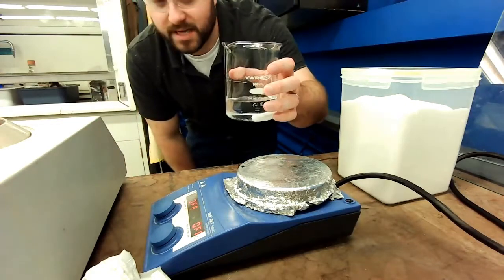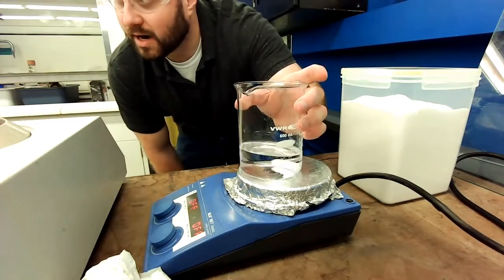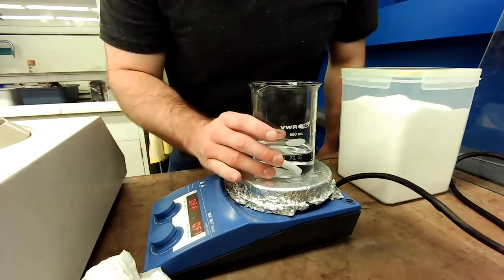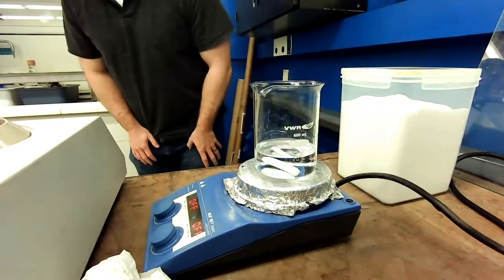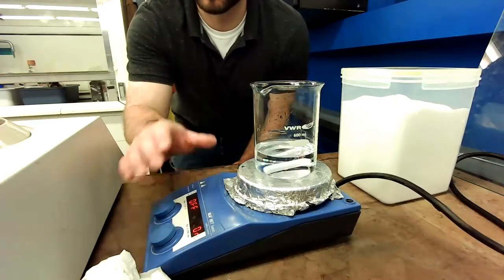Now what I can do is I'm going to take this thing and that magnetic stir bar is going to be attracted to the magnet in this plate. So I'm going to want to look at this, make sure that it's relatively centered, and then I want to turn on that stir bar, okay?